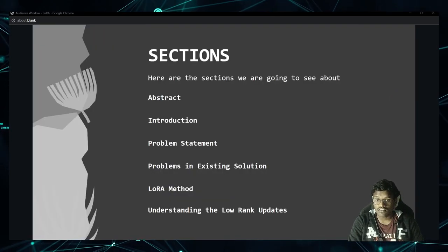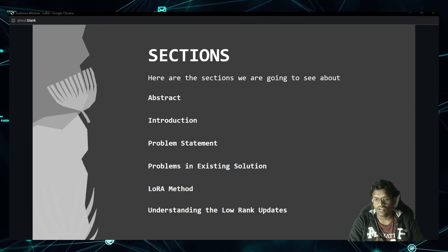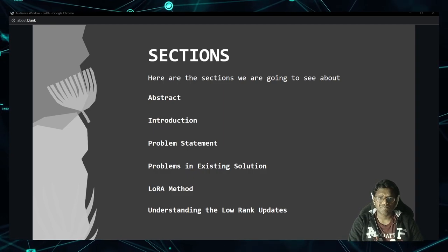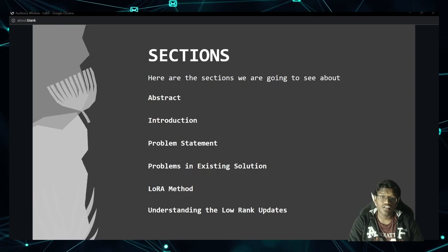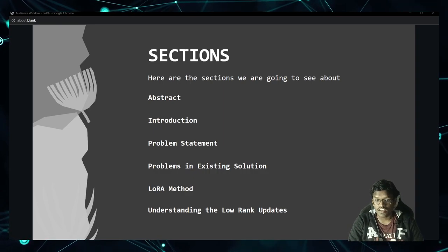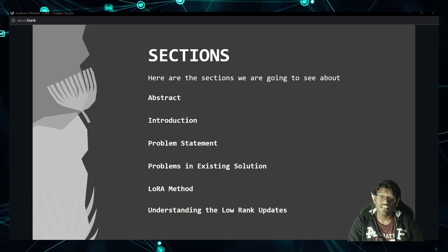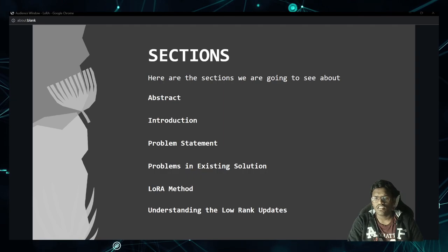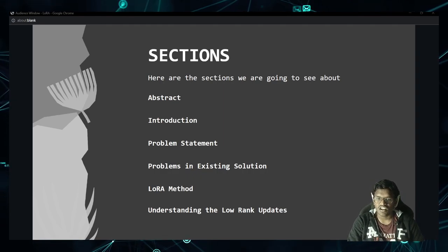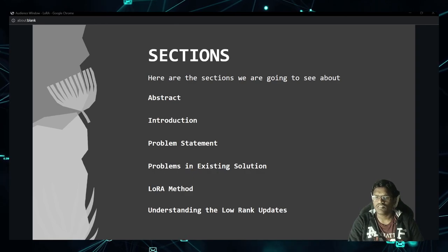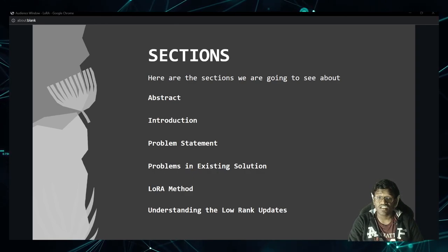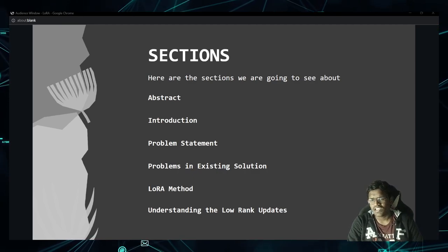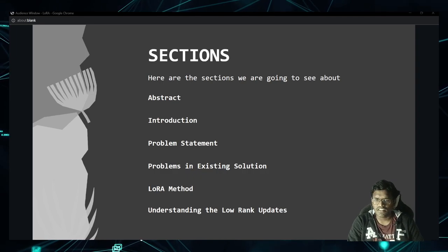The sections we will be covering from the research paper are: abstract, introduction, problem statement, and what are the existing solutions. And then the LoRA method, which is the crux of the paper, and finally an important section about understanding the low rank updates.